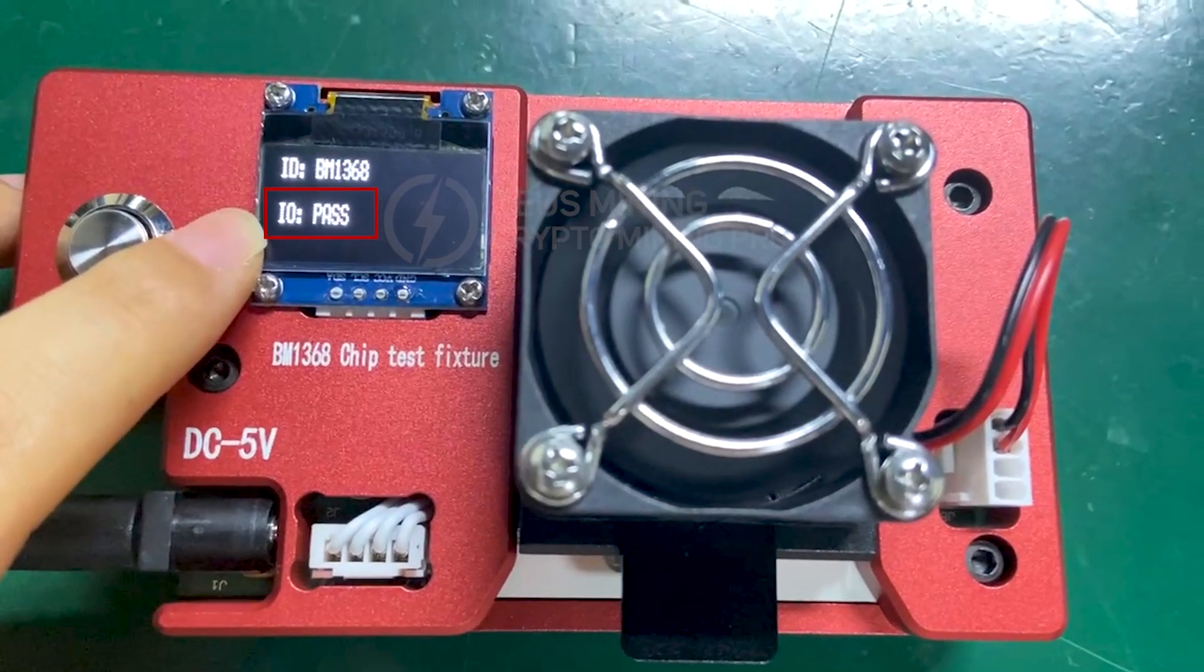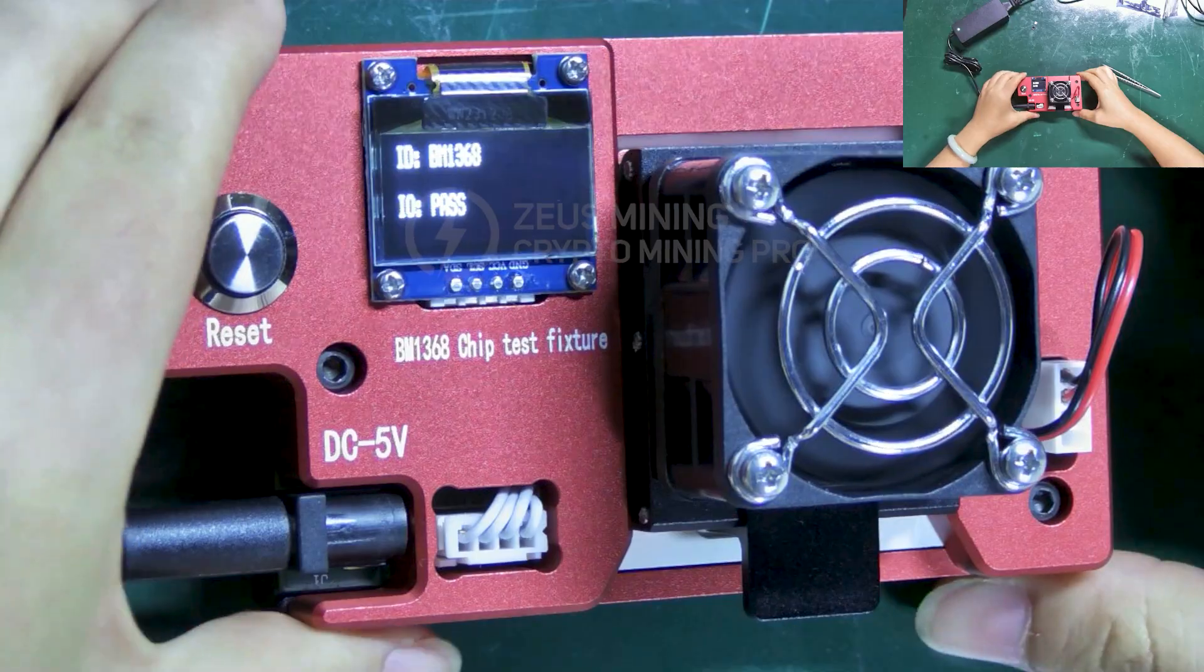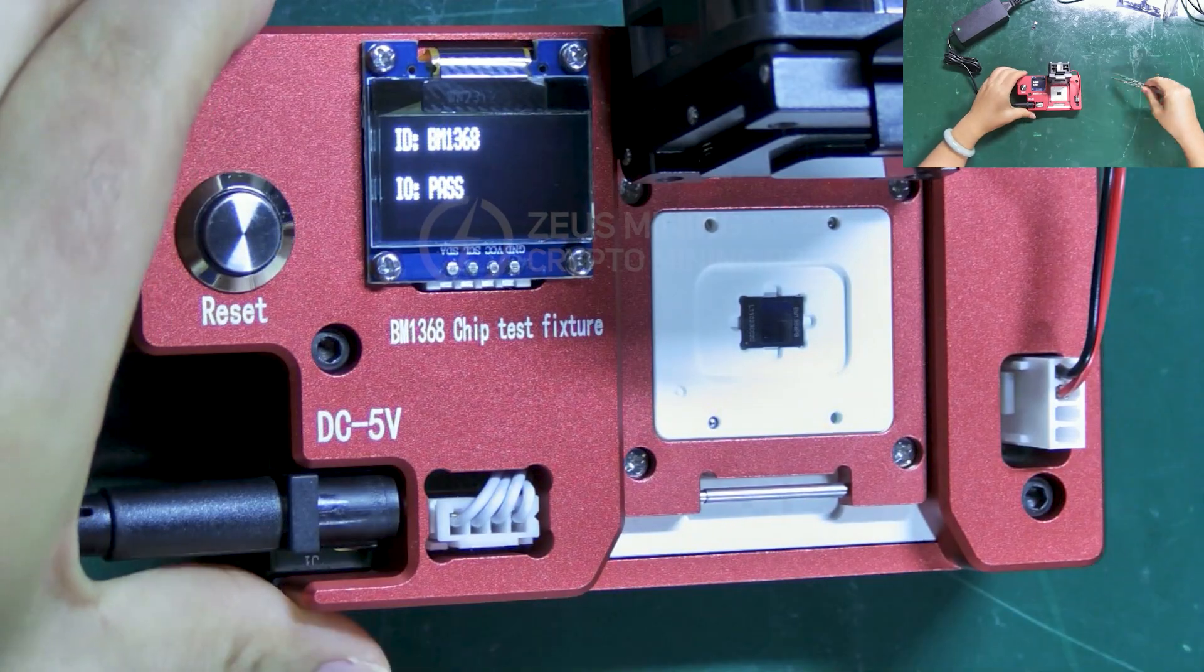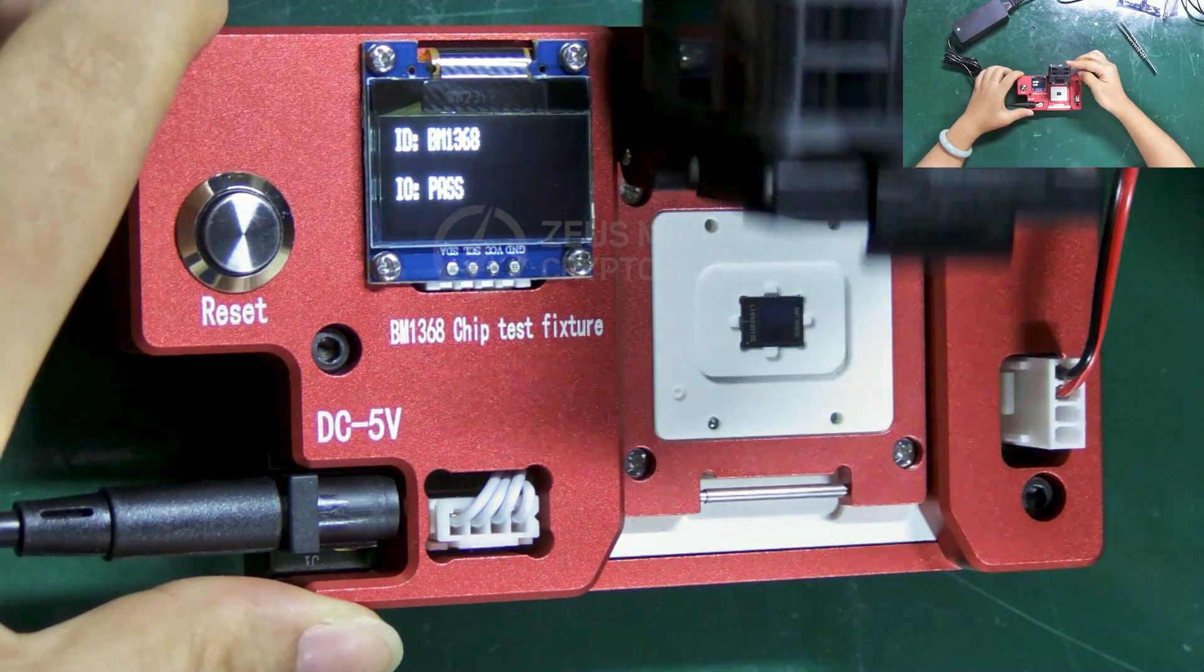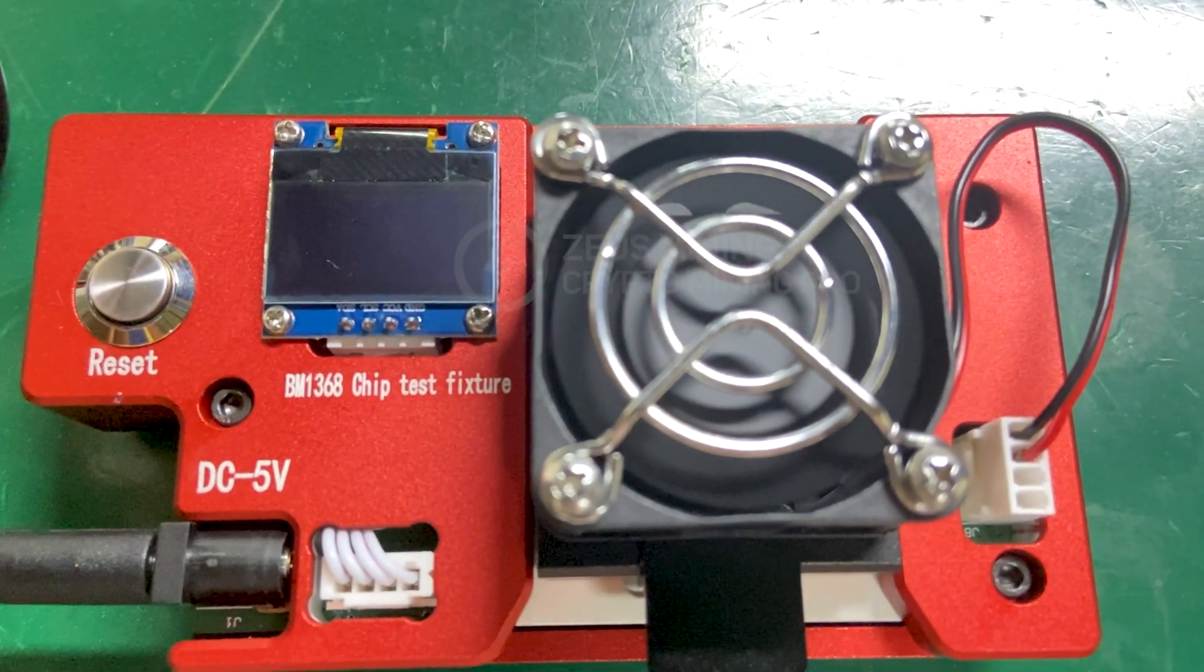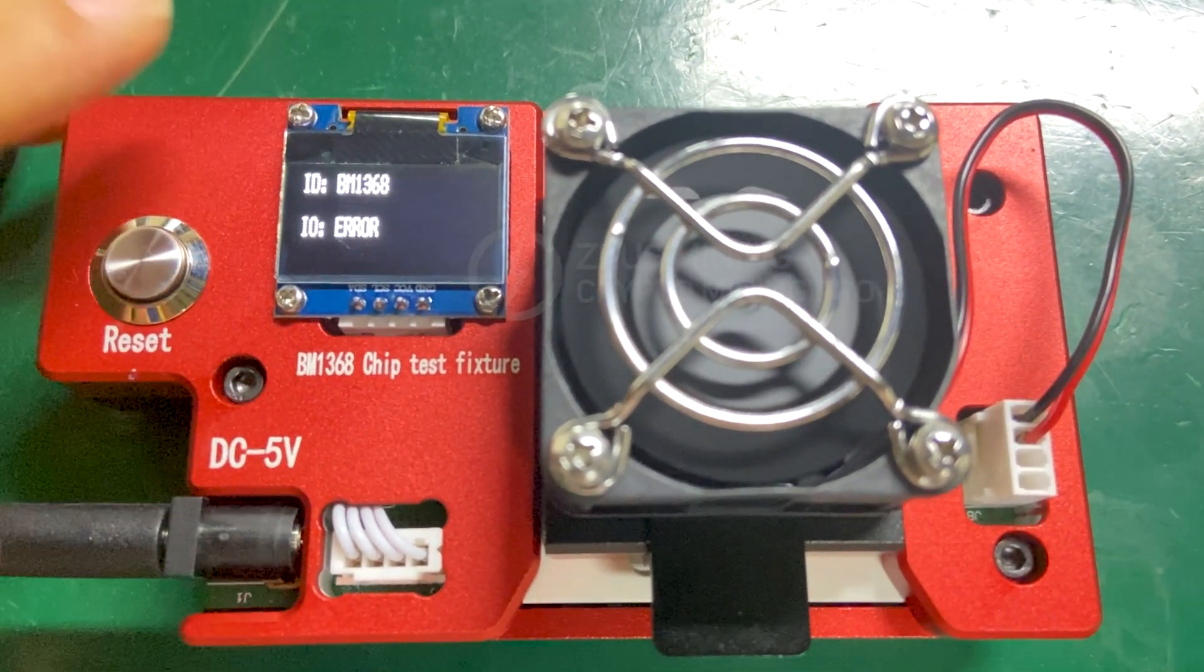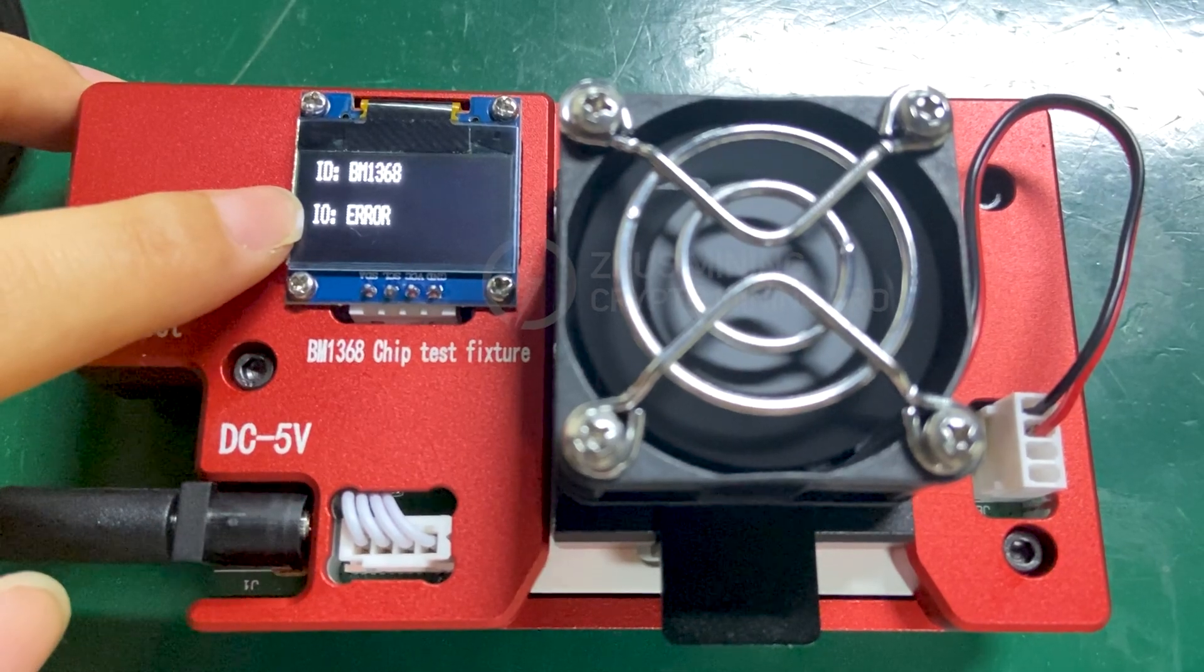Otherwise it will show 'error.' Continue to test the second one. Open the test socket to replace the chip. We can see that its test result shows 'error,' indicating that this one is a damaged chip.